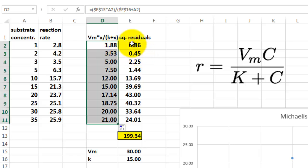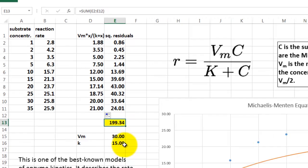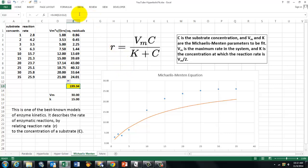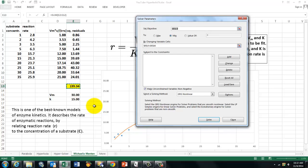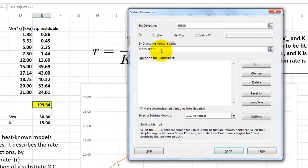You calculate the squared residuals again. Sum them. And you are going to set that at the lowest point by changing Vm and K. So we use again Solver. Based on 199, set it to a minimum. Changing the variable cells, E15, E16, and Solve.